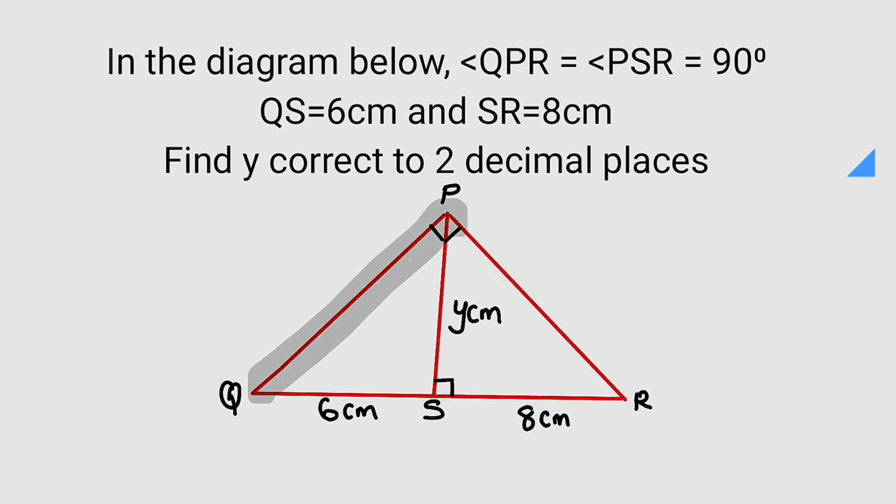And the bigger one, this is a right angle triangle. It states that the length of QS is 6 centimeters, you can see it here, and the length of SR is 8 centimeters, which is this. So we are asked to find the length of y correct to two decimal places. Since we are dealing with right angle triangles, we can apply Pythagorean theorem.